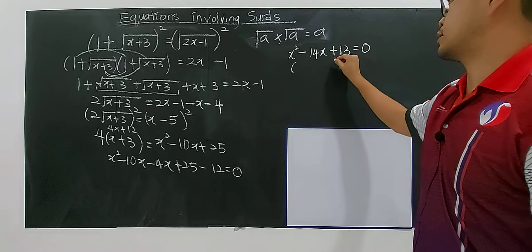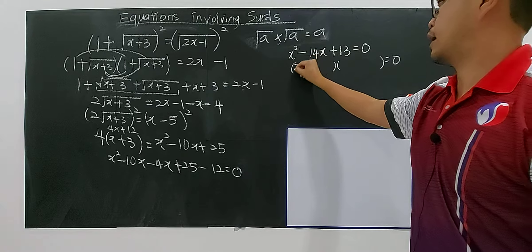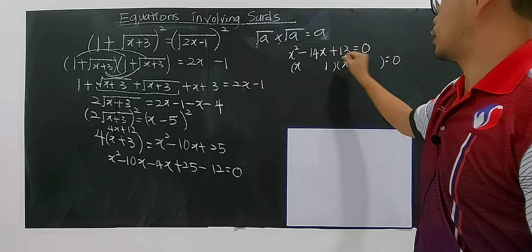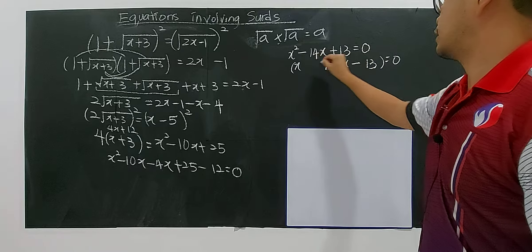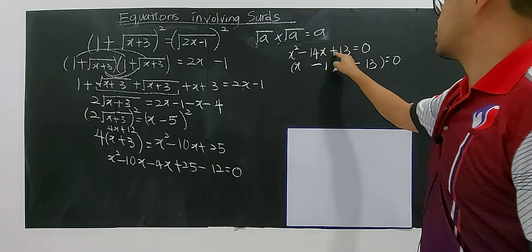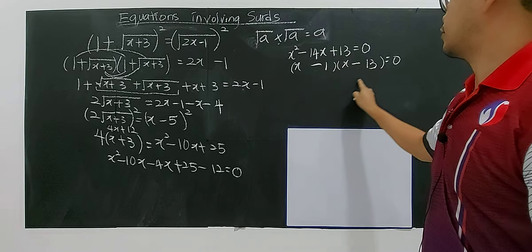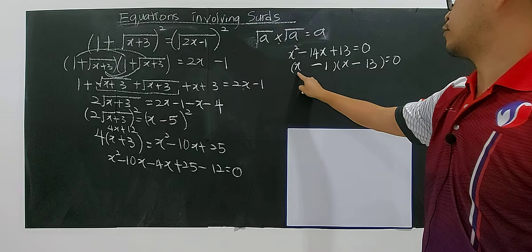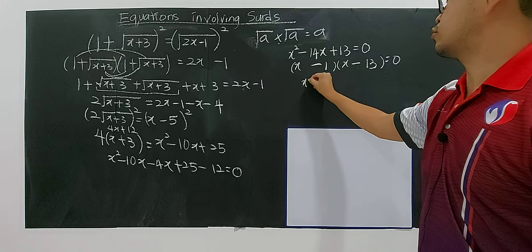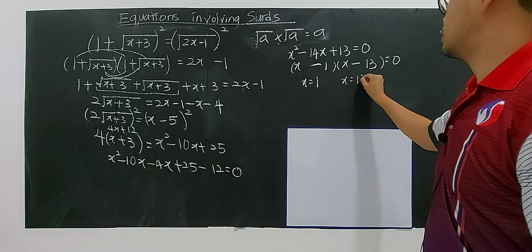Now there are no more surds. Factorize x squared minus 14x plus 13 to get x minus 1 times x minus 13 equals 0. This gives two solutions: x equals 1 and x equals 13.